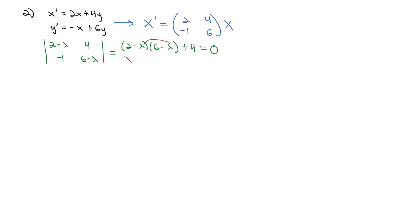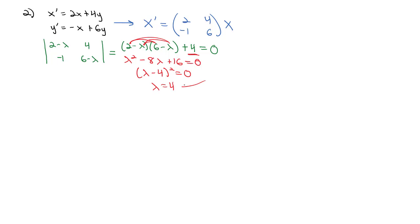Multiplying out: lambda squared, then negative 2 lambda minus 6 lambda gives negative 8 lambda, and 12 plus 4 is 16, so lambda squared minus 8 lambda plus 16 equals zero. That factors to (lambda minus 4) squared equals zero, giving us lambda equals 4 — again a repeated eigenvalue.